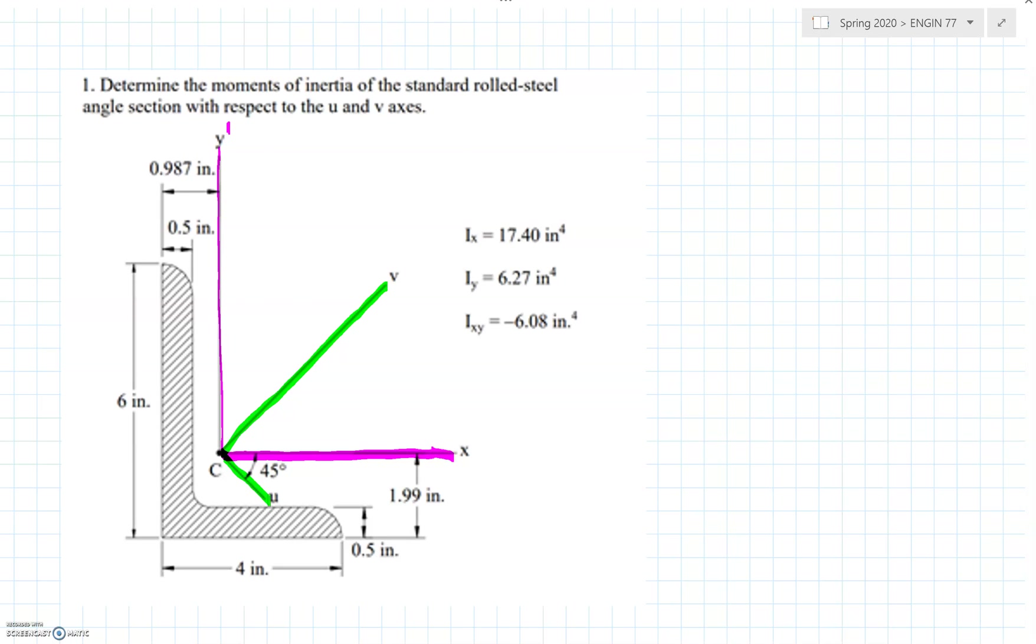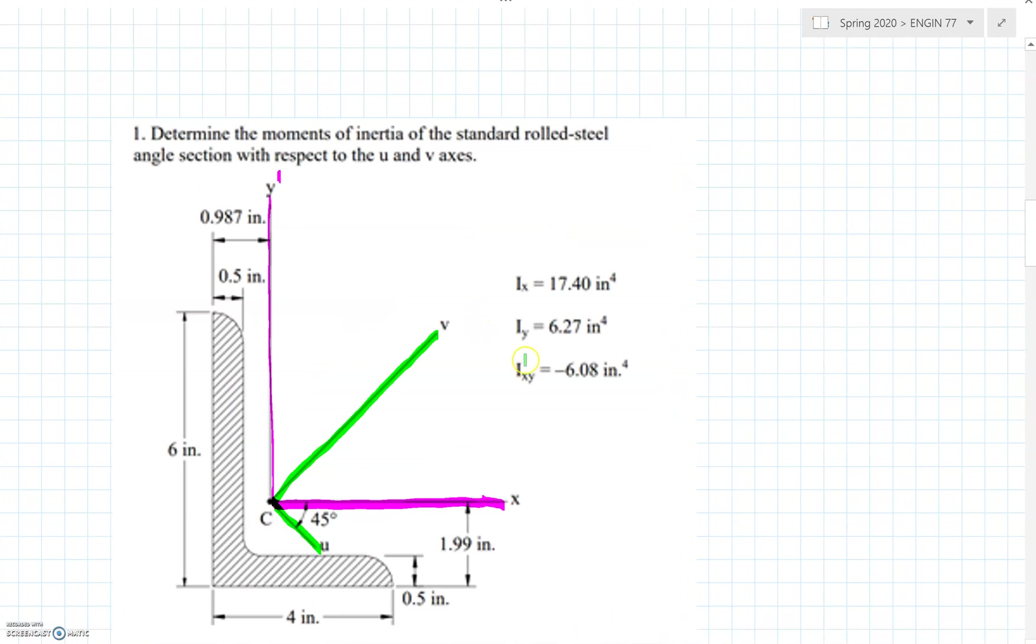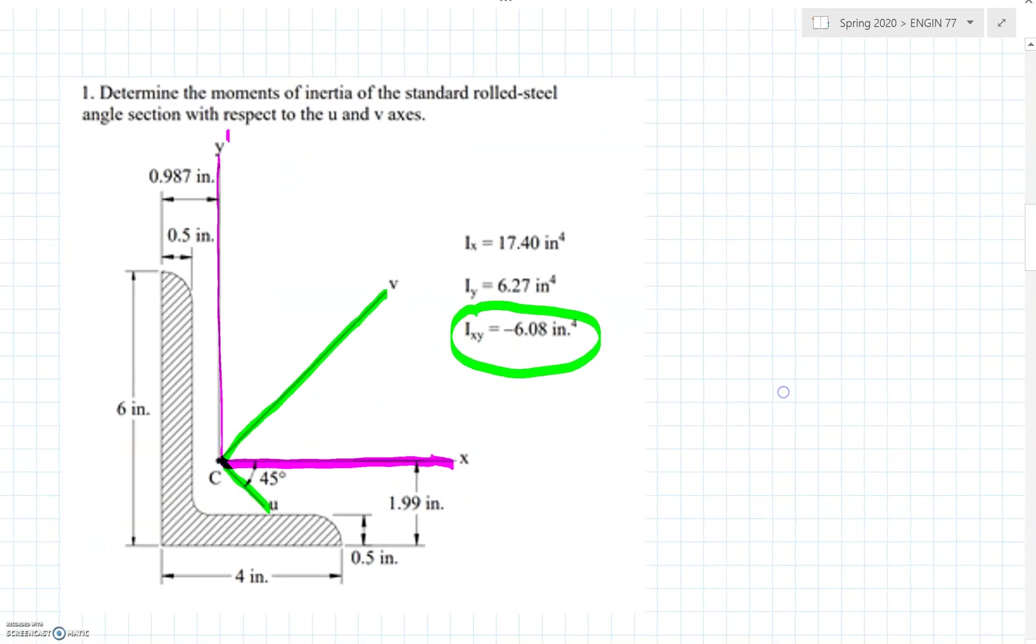We're given the moment of inertia about the x axis is 17.4. The moment of inertia about the y axis is 6.27, and the product of inertia Ixy, you can see section 9.3 in the book about that, is negative 6.08.